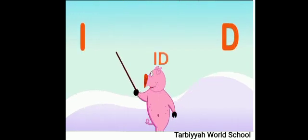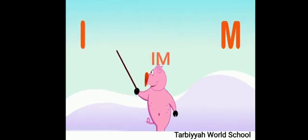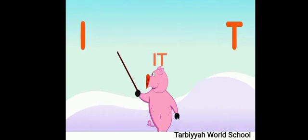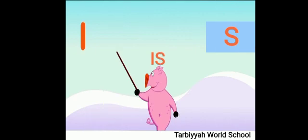I, D — id. Repeat: id. I, M — im. Repeat: im. I, T — it. The sound of T is T, so it's 'it'. I, S — is. Repeat: I, S, is.